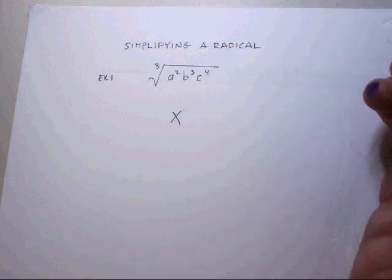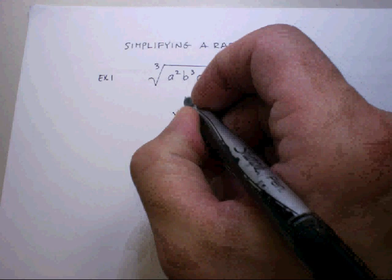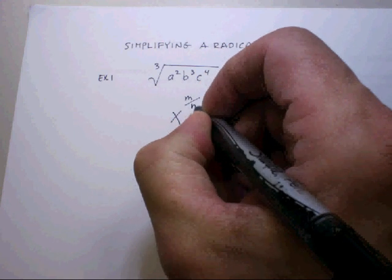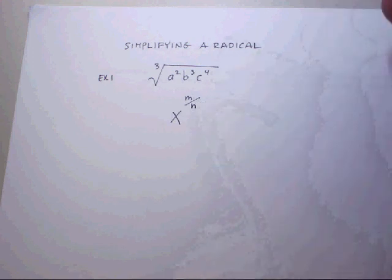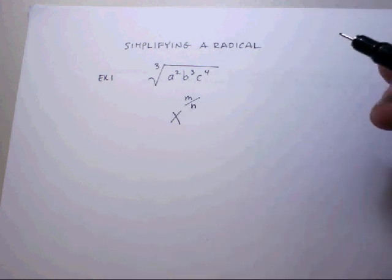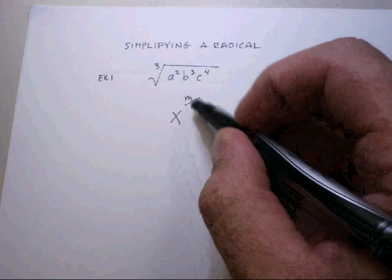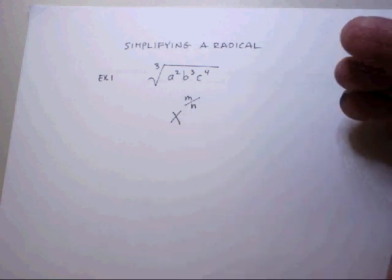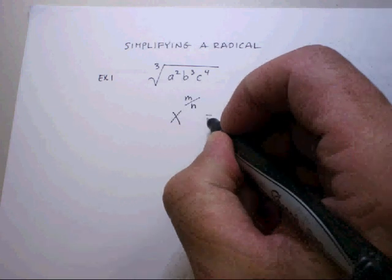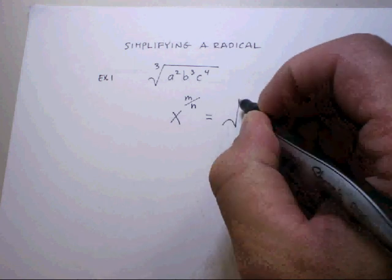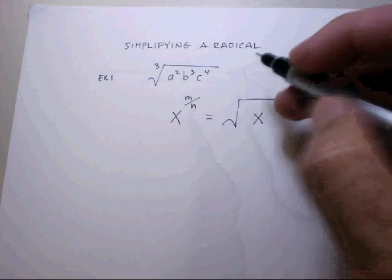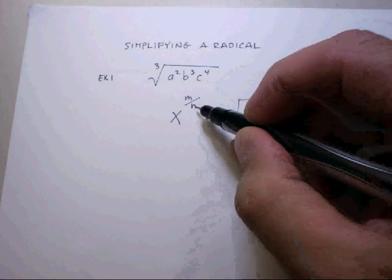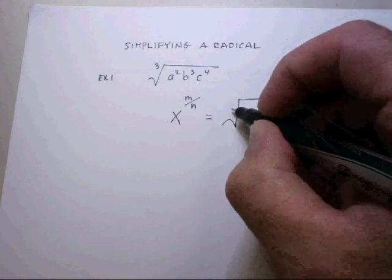Let's pretend I have an exponent of some kind. We'll make it a fraction because any number can be expressed as a fraction. Even a whole number can be expressed as a fraction. So let's say I have some number to the fourth power or something like that, and I want to change it to radical notation. The exponent is in the numerator and the index is the denominator.